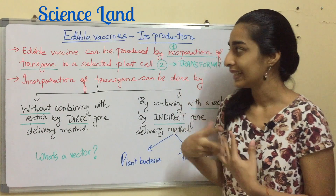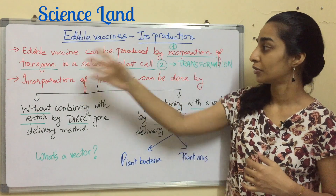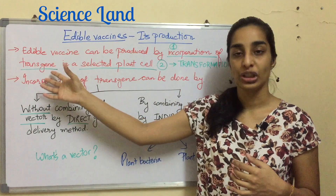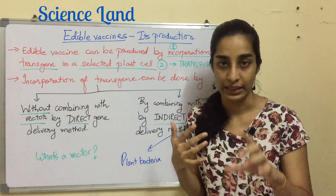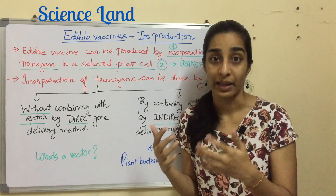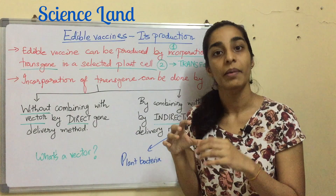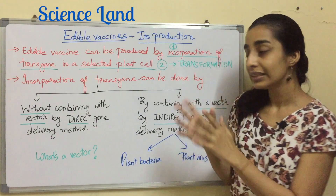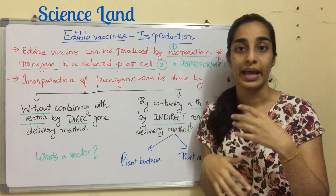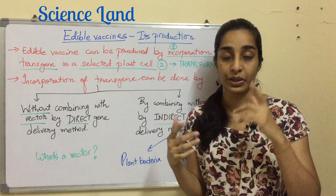Edible vaccines can be produced by incorporation of a transgene in a selected plant cell. A transgene is your antigenic sequence from a virus, or an epitope sequence from any pathogen, that you are introducing into a plant cell. This entire process is known as transformation, and it leads to a transgenic plant.